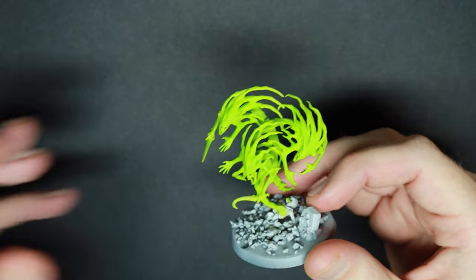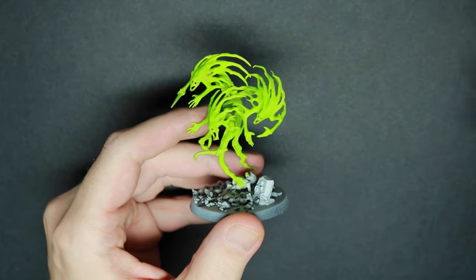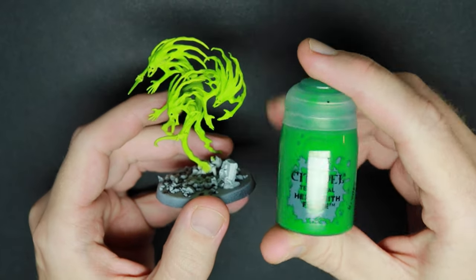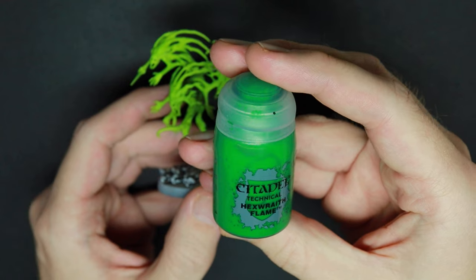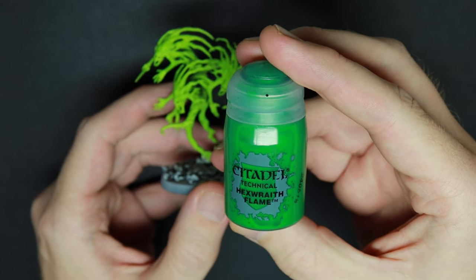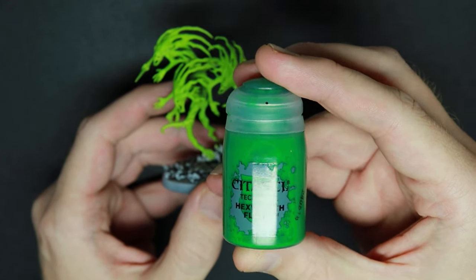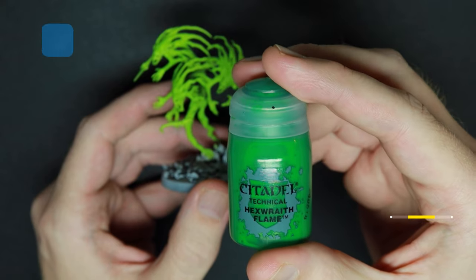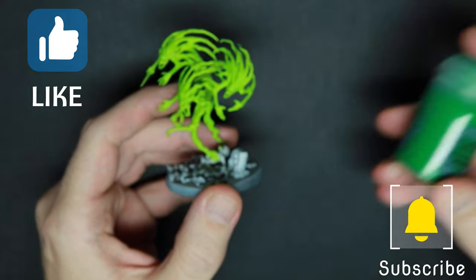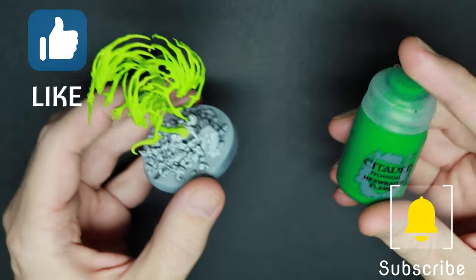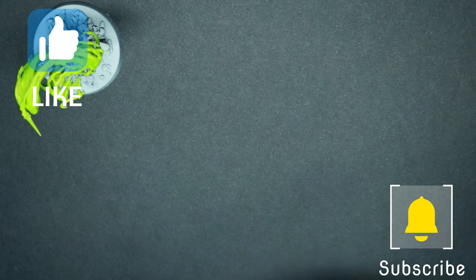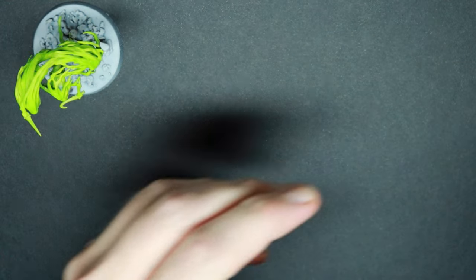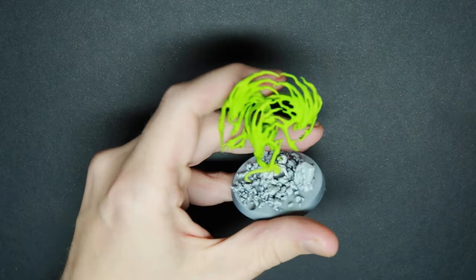So the next thing we will be doing is putting on another Citadel color, Hexwraith Flame. And I will be putting all these colors in the description of the video so you can always find them there. This is a simple technical paint from Games Workshop. It reminds me a lot about a wash and will pull in the recesses exactly where we want it to pull.